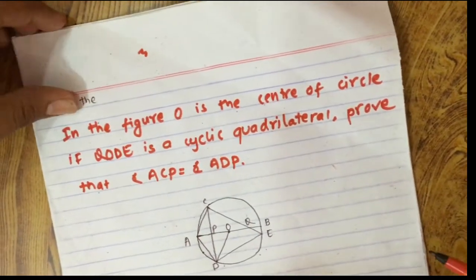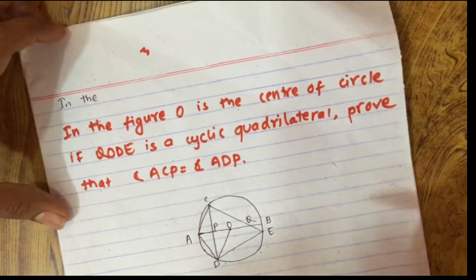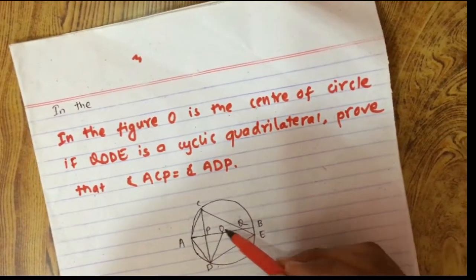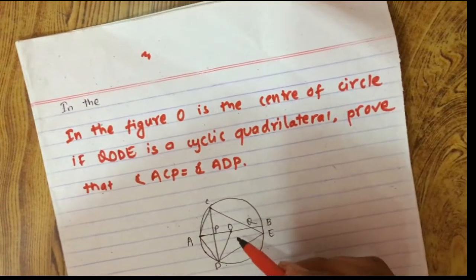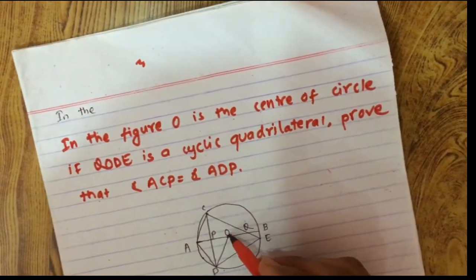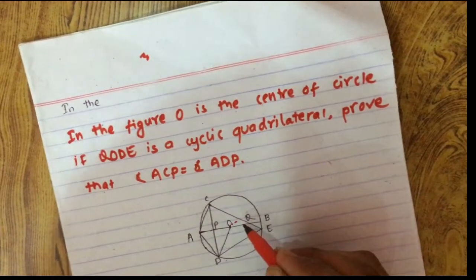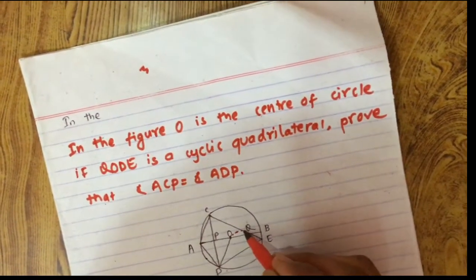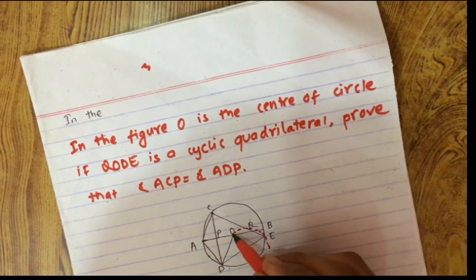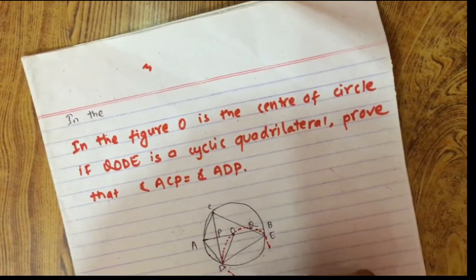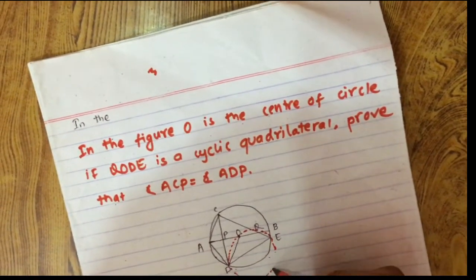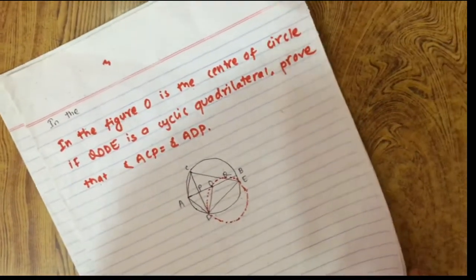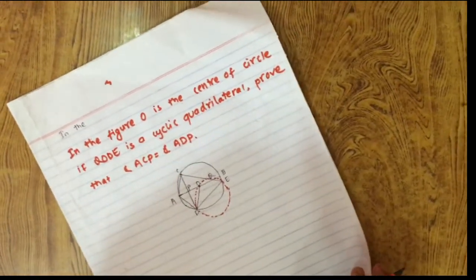First, we have to consider that it's given the cyclic quadrilateral QODE, and we have to acknowledge that if it's a cyclic quadrilateral, then all four corners of the quadrilateral lie on the circle, so you can draw a circle here. It makes solving easier, and now we can proceed to solving the question.